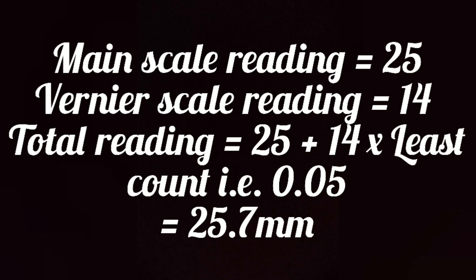We identify the coinciding vernier scale division and multiply it by the least count — that is 14 × 0.05 mm, which gives 0.7 mm. Now just add the main scale reading and the vernier scale reading together, and you will get the total length of the cylindrical rod.